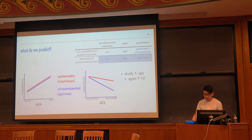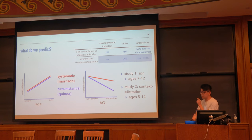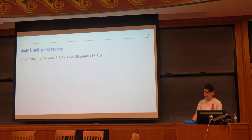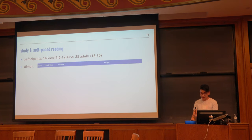We did two studies: a self-paced reading study with kids from 7 to 12, and a context-solicitation study with kids from 5 to 12. I'm going to focus on study 2, but I need to give you the result of study 1 first. In study 1, we compared the metonymy comprehension processing profile in these kids with a sample of adults.